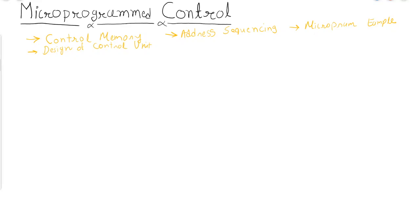Before starting the main discussion, let us have some preliminary discussion on what a control unit is. The first question that arises is: how many types of control units are there in a computer? There are two types of control unit — the first one is hardwired, and the second one is microprogram.